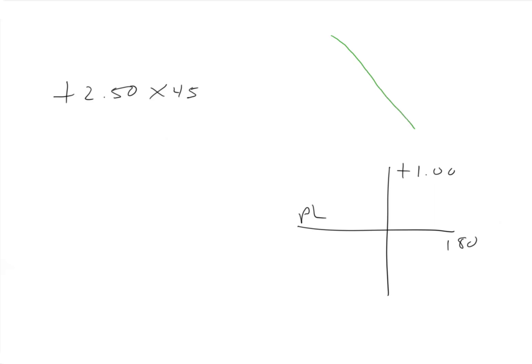We know that the 45 is this one and the 135 is this one. The axis is along the 45, so that's where the plano is. The power must be along the 135, which is 250. And halfway between plano and 250 is halfway between plano and 250, which is 125.